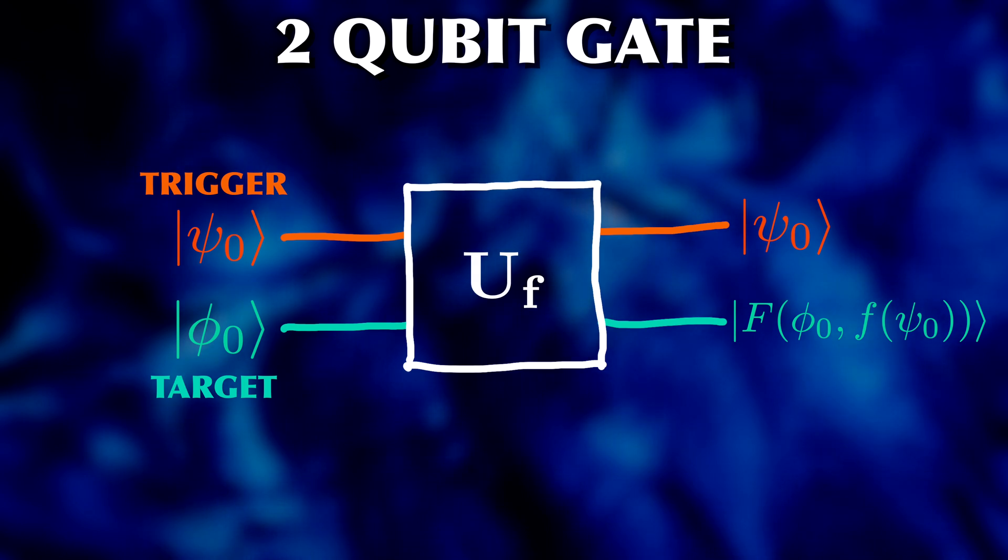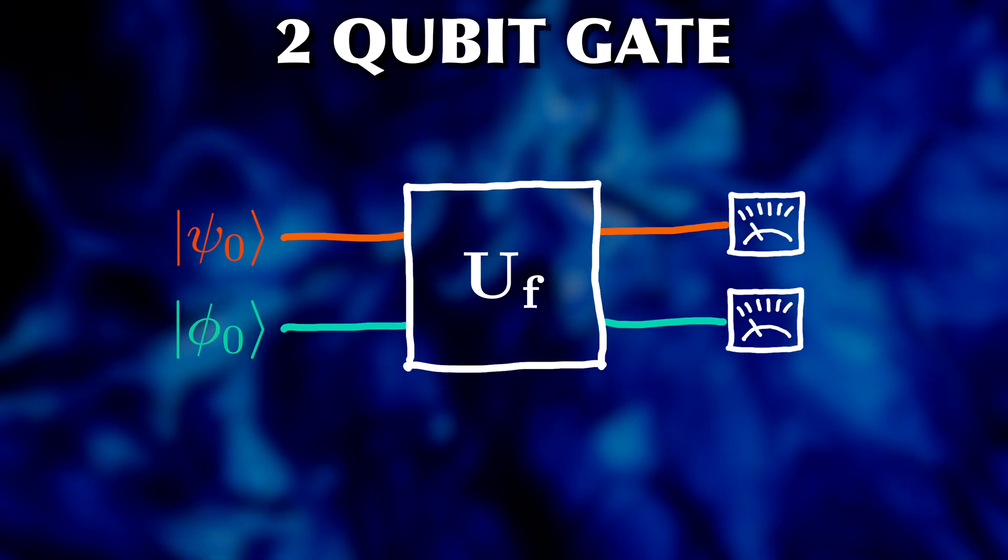Remember though that when you measure the qubits at the end of this, you'll still only get zero or one for each, at random with certain probabilities, and all information previously stored in the state will be lost. That's the big limitation of measurement.